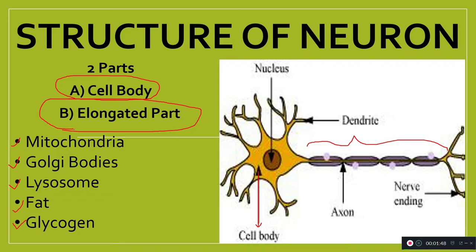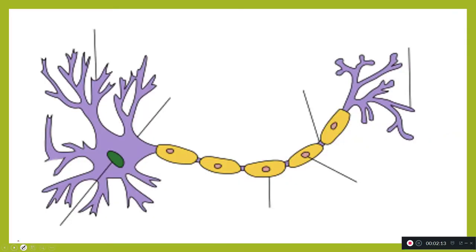The elongated part consists of a variable number of nerve fibers that extend from the cell body. These are called the elongated part, and they are of two types: dendrons and axons.